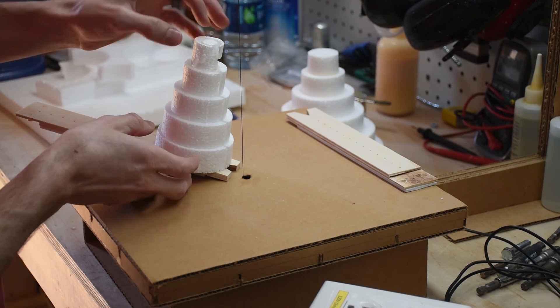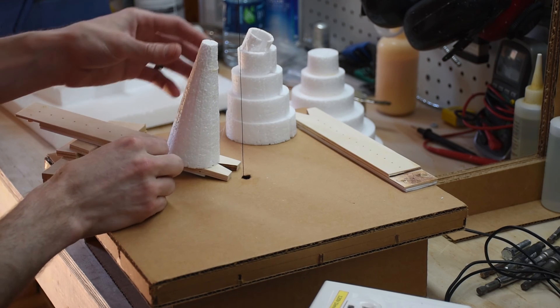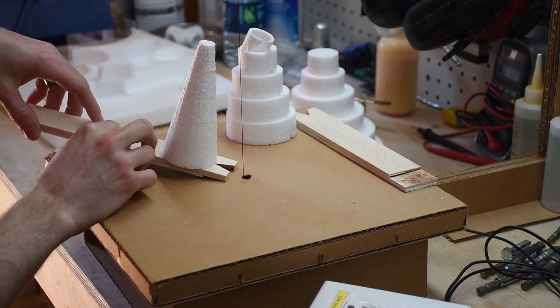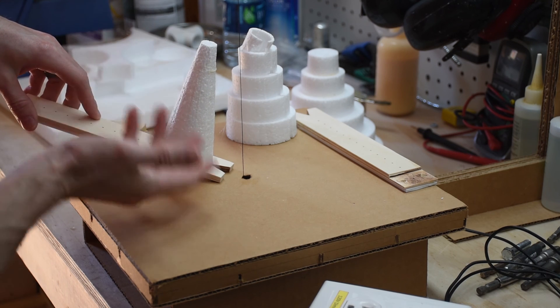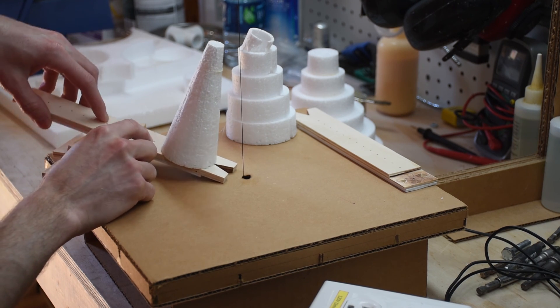And just like that we have a cone shaped. Now you can see like I mentioned I left a little bit here up the top. I can always tilt it more but I can never create new foam where there was none. But you can see just how easy that really was to cut a cone.